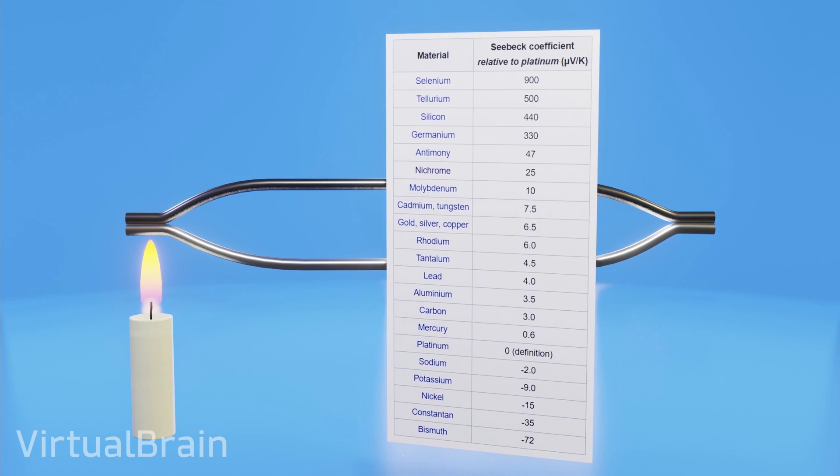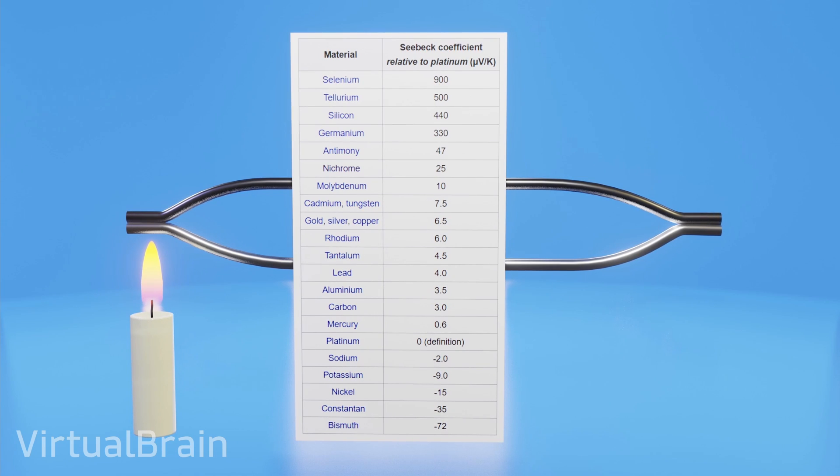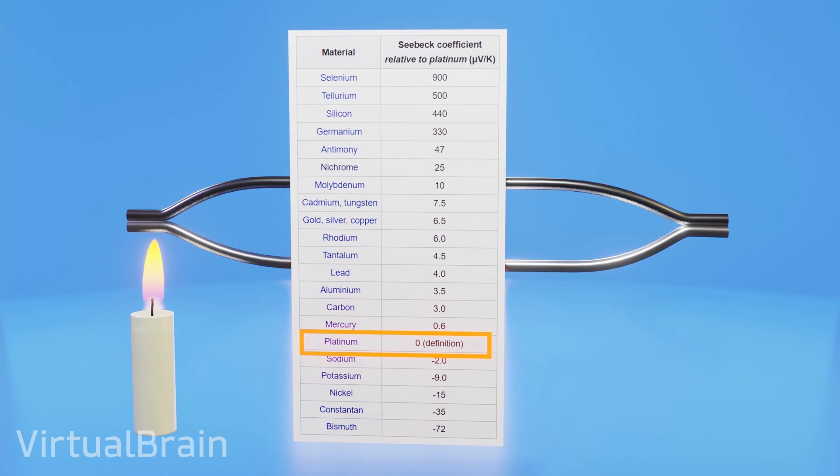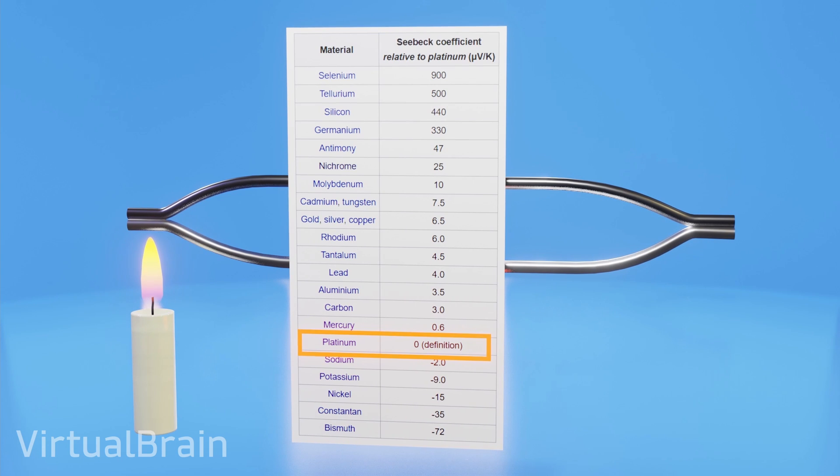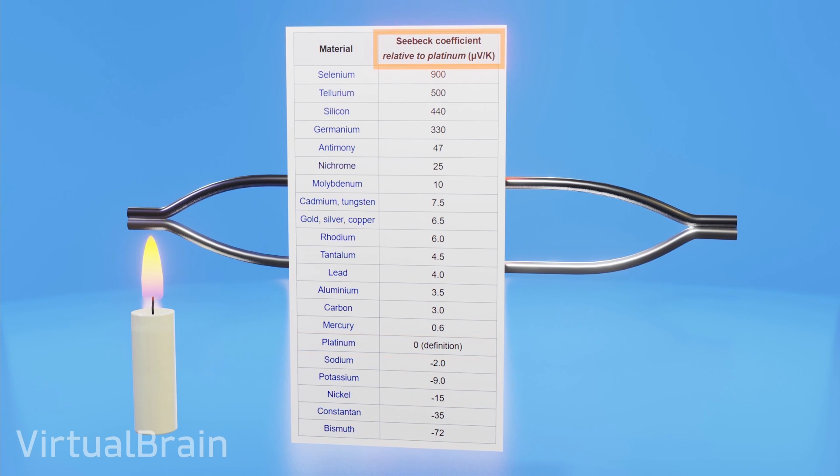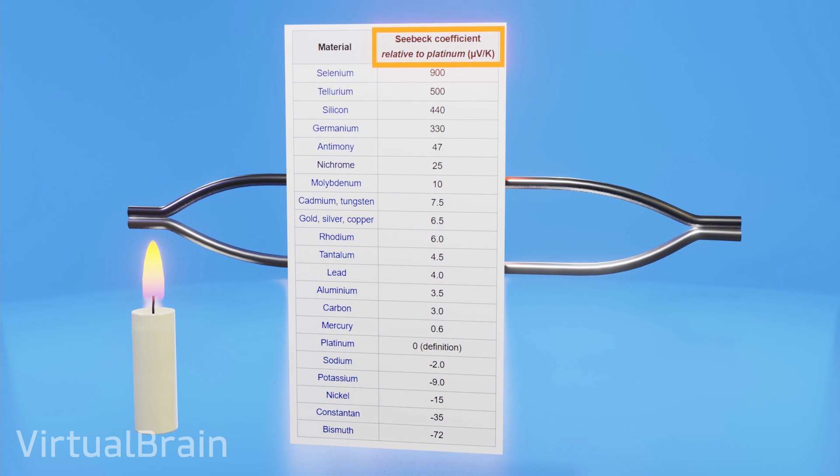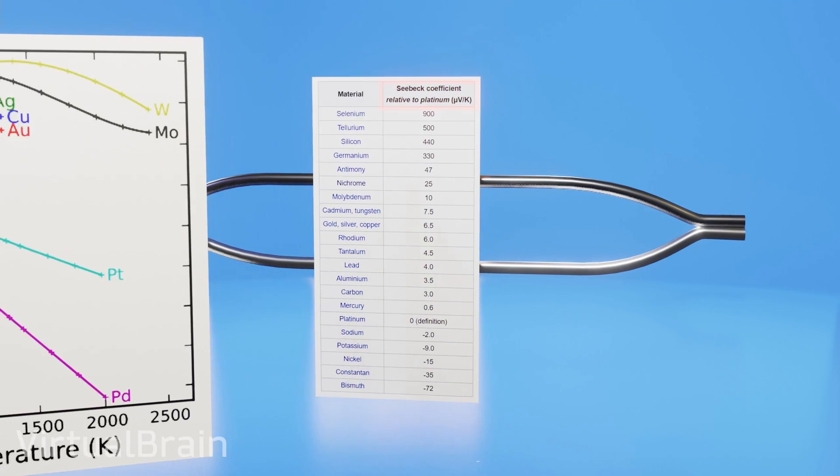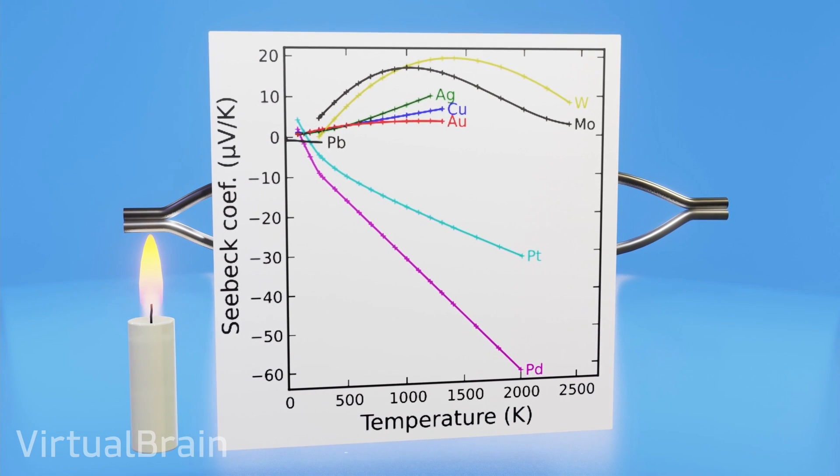Due to this behavior, the Seebeck coefficient appears, which is an intrinsic property of each material but is usually expressed as a value relative to a second material such as platinum. Because as we saw, two different materials are needed to generate the effect. The unit of measurement of the Seebeck coefficient is microvolts per degrees Kelvin and helps us calculate what voltage we should get as a result depending on the temperature difference between the two ends. This coefficient does not have a linear behavior, but for certain materials and temperature ranges this simplification can be made.